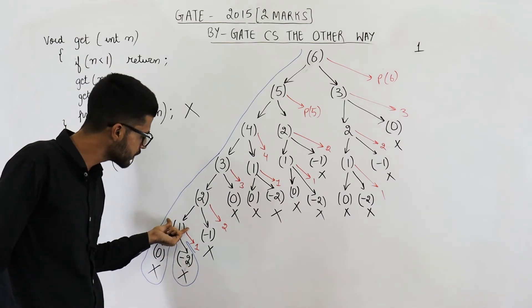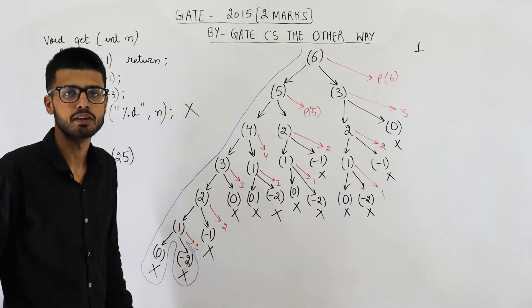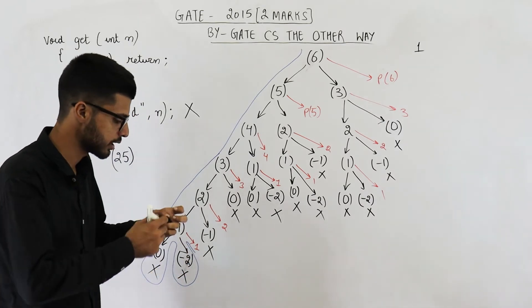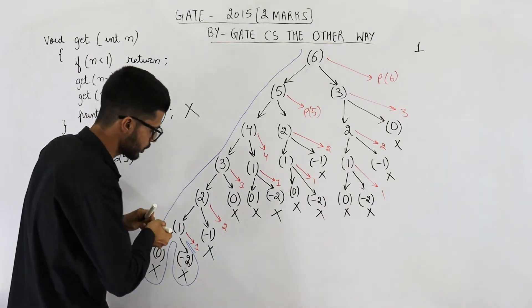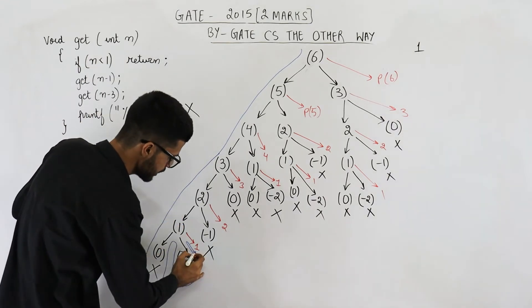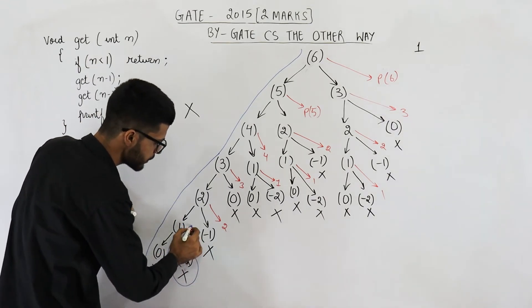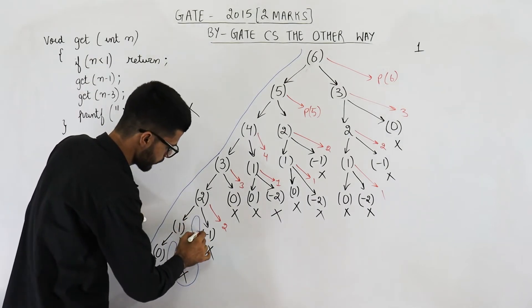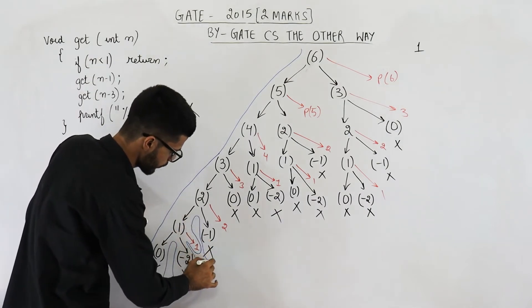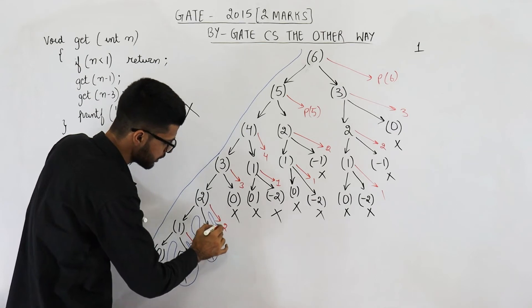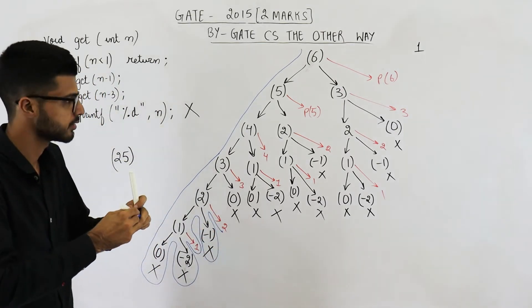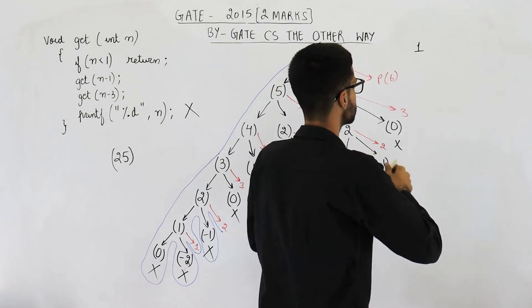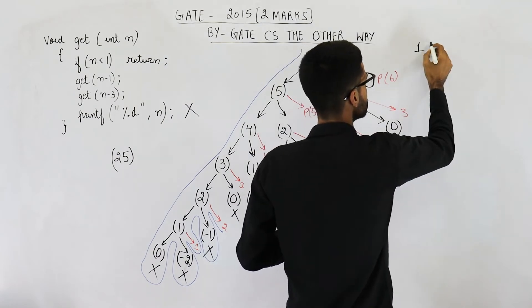So the first number that is printed is 1. After that, keep on scanning the tree top-down and left to right. You have encountered one more print statement — this number is 2. That means 2 will be printed.